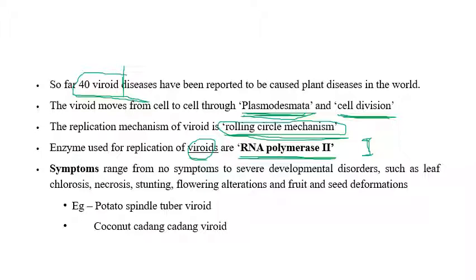Symptoms of viroids range from severe developmental disorders such as epinasty, leaf chlorosis, necrosis, stunting, flower alterations, and fruit and seed deformations. The best examples are potato spindle tuber viroid — the first viroid discovered — and coconut kadang-kadang viroid.